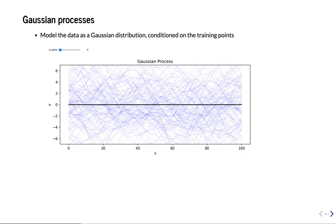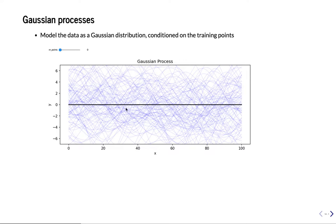A Gaussian process is basically a series of points, or a function. Given an input x, I want to predict the output y. There's going to be a function somewhere in this space. And because of the Bayesian approach, we're going to assume that this distribution of possible functions is a Gaussian distribution. In the beginning, I know nothing — I haven't seen a single observation for x, so my best guess is that y is always zero. That's my mean, and I have a large variance around that — it could be any of these blue functions.